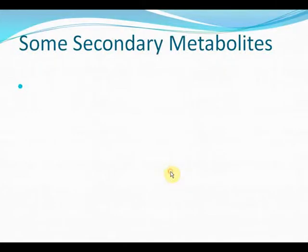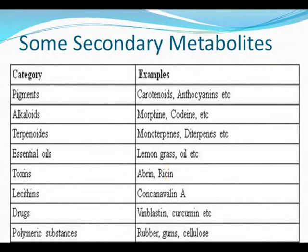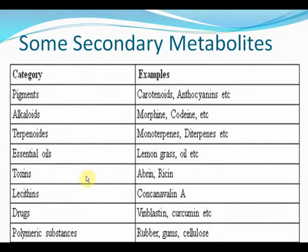Secondary metabolites are not obtained from animals but from plants. These are in the form of pigments, alkaloids, terpenoids, essential oils, toxins, lecithins, drugs, or some polymeric substances.